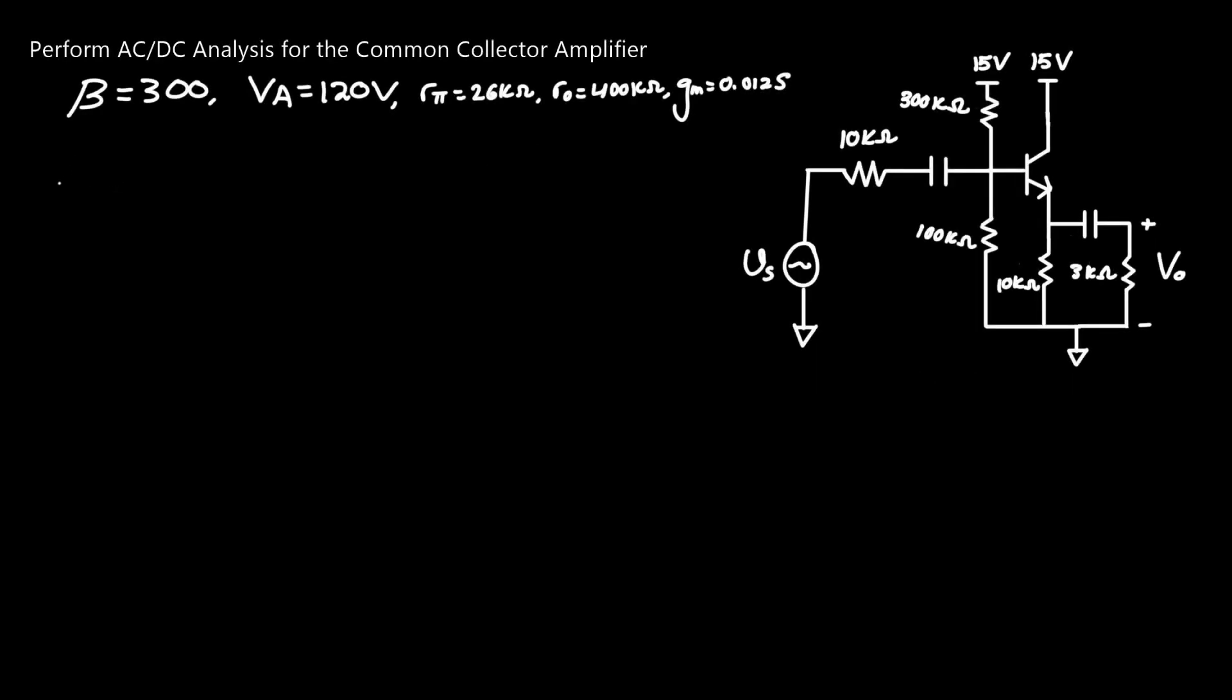Now under AC conditions, we know that the capacitors are now shorted. This means that we now have to reintroduce the voltage source that's being perturbed, as well as all the remaining resistors around the capacitors. Let's begin by drawing the model. On the left side here, we have our Vs, and we have our source resistance RS equaling 10 kilo ohms. Now let's use our new Thevenin resistance that we found in the previous section to be 75 kilo ohms.